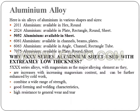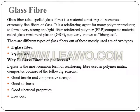Aluminium: There are various types of aluminium grades, but we chose 5052 aluminium, available in sheet form. Glass fiber: There are two types of glass fibers — E-glass fiber and S-glass fiber. For our project, we chose E-glass fiber.